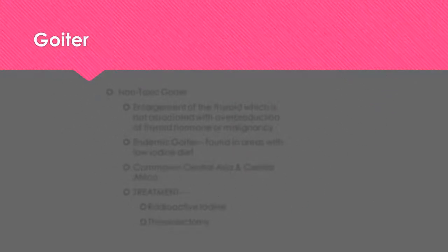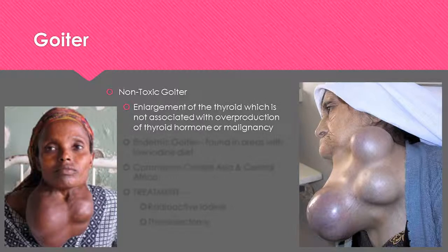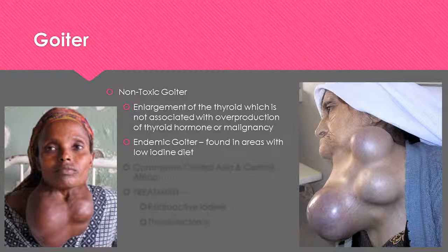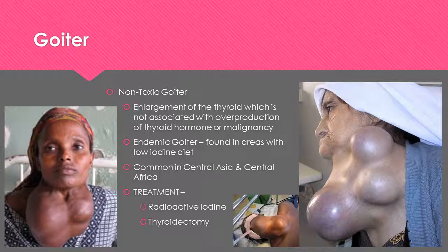Let's discuss the non-toxic goiter. A non-toxic goiter is an enlargement of the thyroid which is not associated with overproduction of thyroid hormone or malignancy. Goiters found in areas with low iodine diets are referred to as endemic goiters, which are common in Central Asia and Central Africa. Treatment involves radioactive iodine and thyroidectomy.